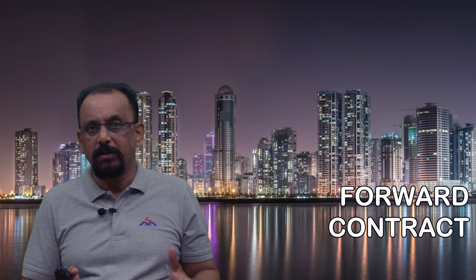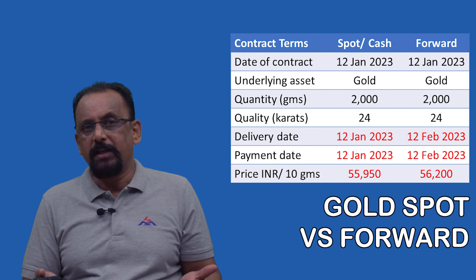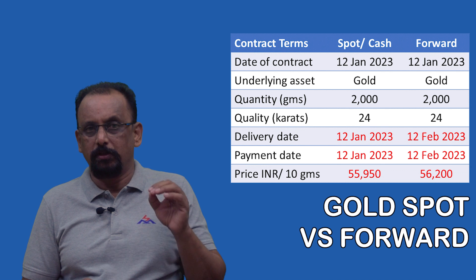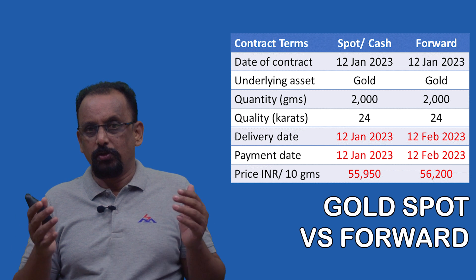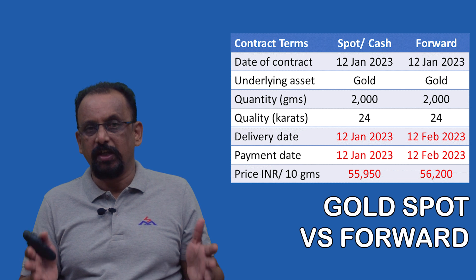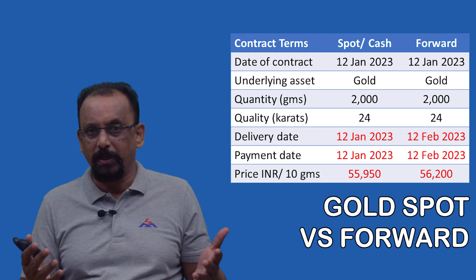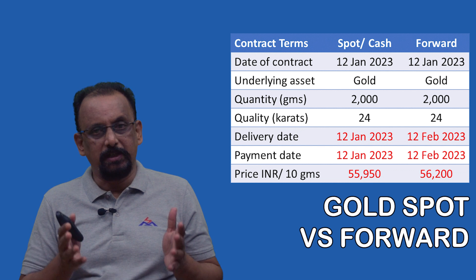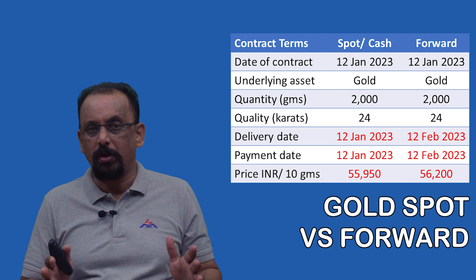Let's take an example to understand the difference between spot and forward contract. Let's look at a contract for buying gold from the buyer's perspective. The buyer is looking to buy gold of 2 kg or 2000 grams, 24 carat variety. The date of the contract is 12th January 2023. This is a spot or cash contract, so the gold will be immediately delivered by the seller to the buyer. Payment is also made on the same day — delivery and payment both on 12th January 2023 — at a rate of 55,950 rupees per 10 grams, which is the spot rate for gold on that day.